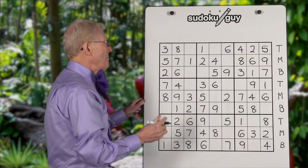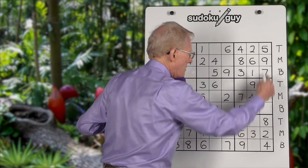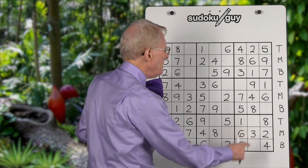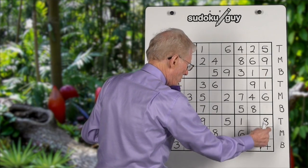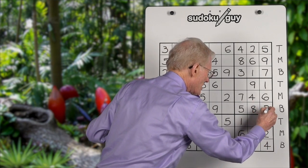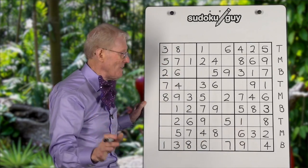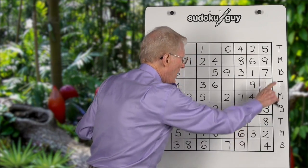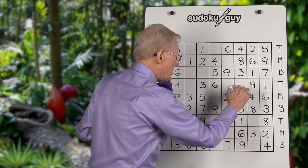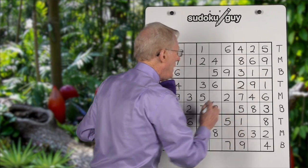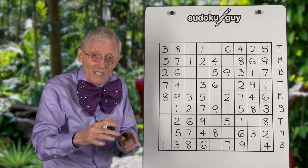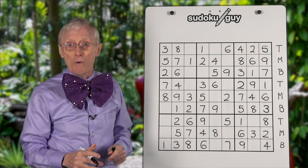Now because we put that five in, this column only has one left. One, two, three — three is missing. Now because I put that three in, the ramification means that this block only has one left. It's a one, it's a two. All that from one number leading to another number leading to another number — we call that ramifications.